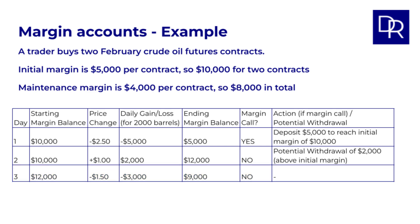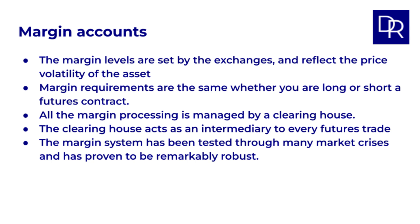As you can see from this example, the margin account balance fluctuates daily with price changes. The minimum initial and maintenance margin levels are set by the futures exchanges themselves and are designed to reflect the price volatility of the underlying asset — more volatile assets will typically have higher margin requirements. Importantly, margin requirements are the same whether you're long or short a futures contract. This symmetry is a key feature of futures markets, making it just as straightforward to bet on prices going down as going up. Behind the scenes, all of this margin processing is managed by a clearinghouse. The clearinghouse acts as an intermediary to every futures trade, becoming the buyer to every seller and the seller to every buyer. This means the clearinghouse guarantees that all trades will be honored, significantly reducing credit risk in the market. The margin system is really the backbone of futures markets — it is designed to protect both buyers and sellers and ensure the financial integrity of the market. It's a system that has been tested through many market crises and has proven to be remarkably robust.